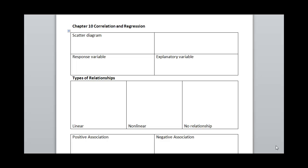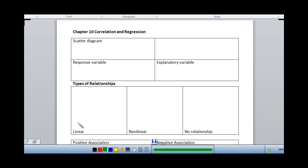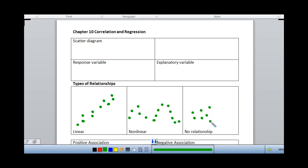When we look at the scatter diagram, we could come up with several different types of patterns for our data. We might see data that has a roughly linear pattern — it doesn't have to be perfect, but approximately linear. We can also see data that has a non-linear pattern, and then we might have data that has just no real pattern at all — it's just kind of everywhere, it makes a fuzzy cloud. In this particular topic, we're looking for data that has approximately a linear pattern.